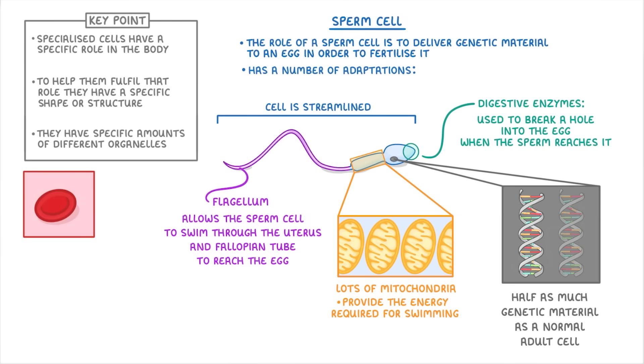For example, red blood cells and nerve cells have completely different shapes, different structures, and different assortments of organelles, because they're adapted to entirely different roles in the body.